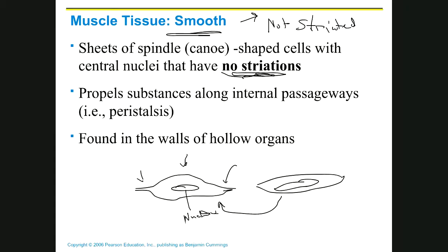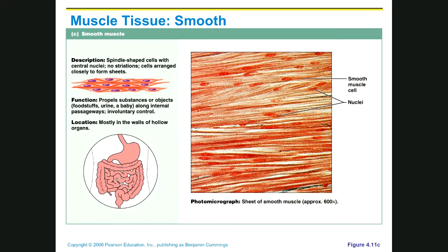If you line up a bunch of canoes, you can't line them up next to each other perfectly because of the way they're shaped, and that's the same way it is for smooth muscle. The nuclei are not going to line up perfectly. So if you cut it, some cells are going to look like they don't have a nucleus, some are going to look like they have a really big nucleus, and some are going to look like they have a little one.